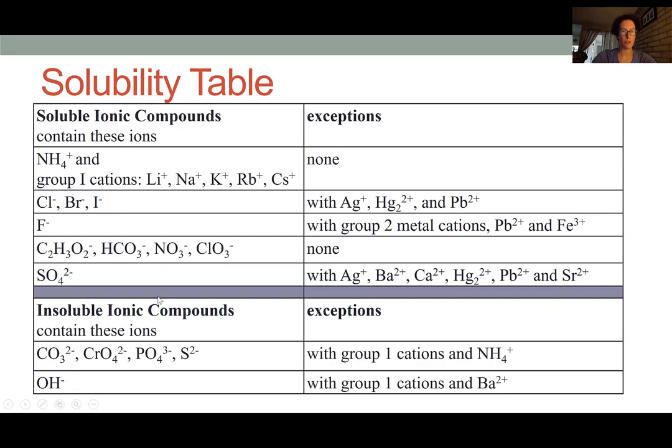Looking at the lower half of the table, this shows us that a lot of these 2- ions, like carbonate, chromate, phosphate, and sulfide, tend to form insoluble compounds, meaning if they combine with most cations, we will get a solid precipitate.